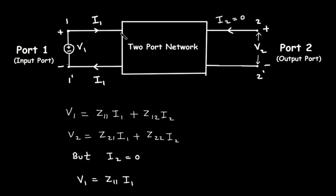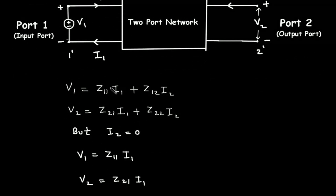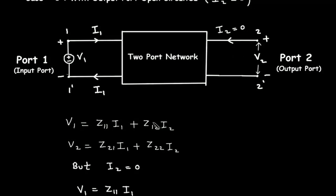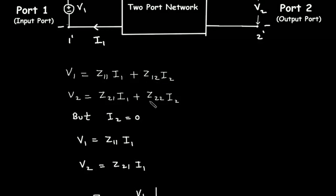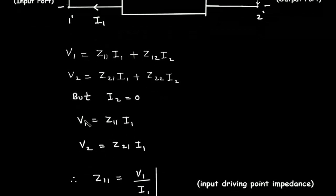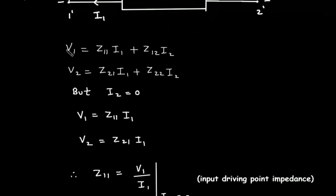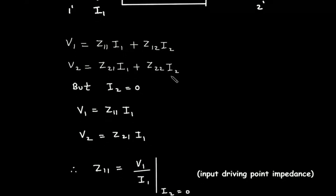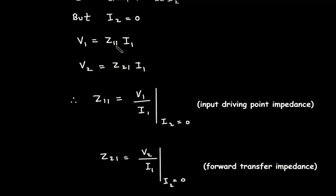The equation for Z parameter is V1 is equal to Z11 I1 plus Z12 I2, and V2 is equal to Z21 I1 plus Z22 I2. Since I2 is equal to 0, we substitute I2 equal to 0. This term will be 0 in both equations. So what remains: V1 is equal to Z11 I1, and V2 is equal to Z21 I1. From here we can find Z11. Z11 is equal to V1 by I1 when I2 is equal to 0.